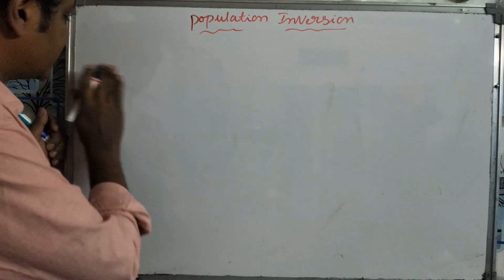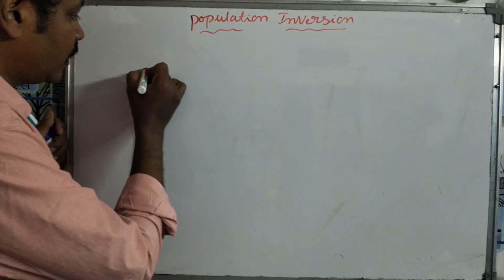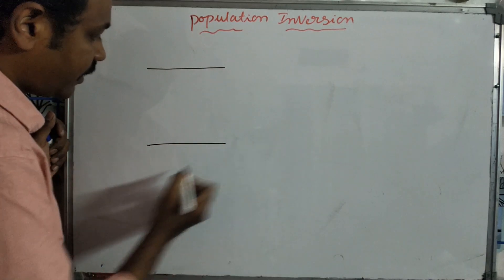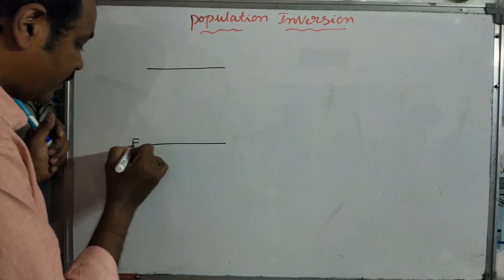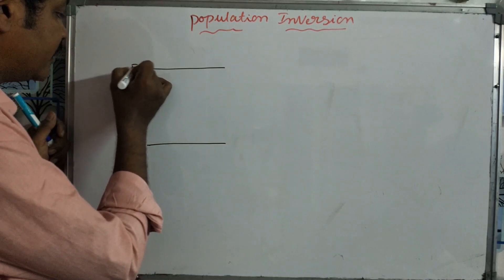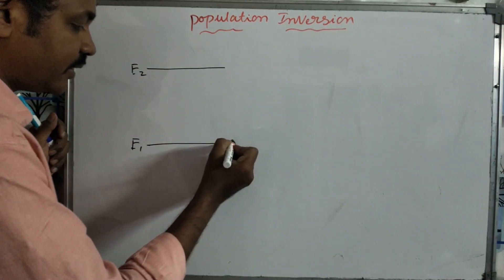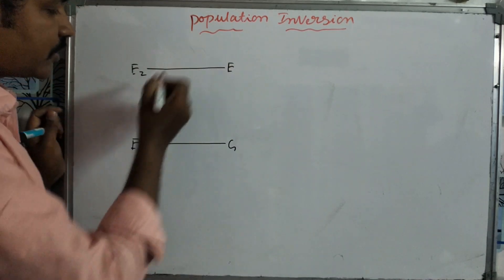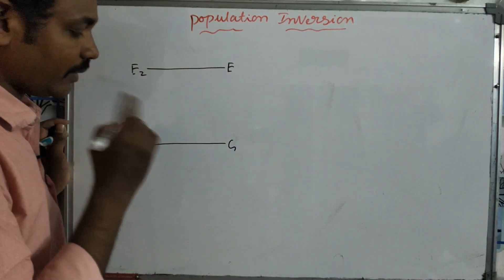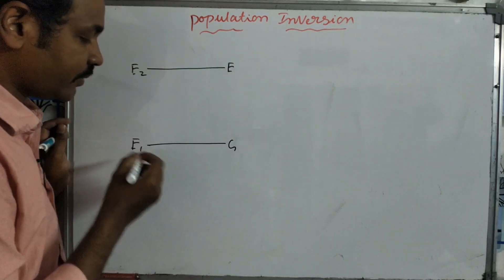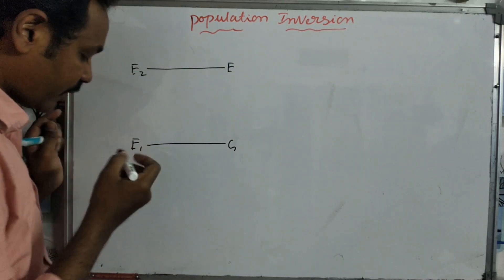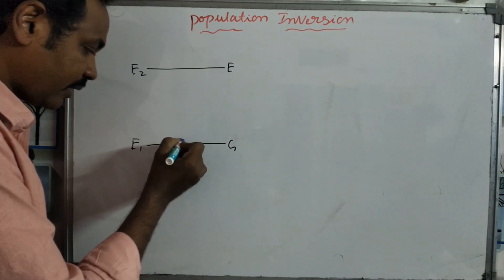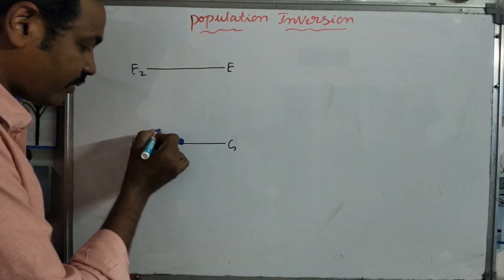We are talking about two levels: E1, E2, and E3 — the ground state and the excited state. Atom possesses the excited state and comes down. We are talking about the photon. The photon is the result.